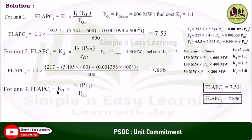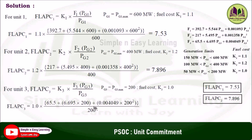Similarly, for unit 3: FLAPC_3 is equal to K3 multiplied by F3(PG3) divided by PG3, where PG3 max is equal to 200 and the fuel cost K3 is equal to 1. Substituting these values, you get 7.832.